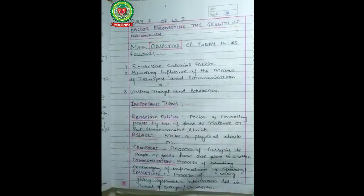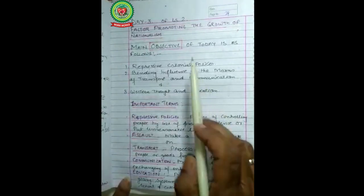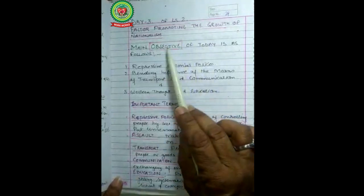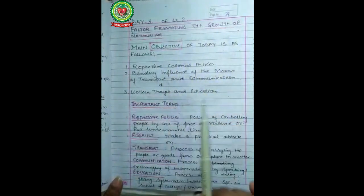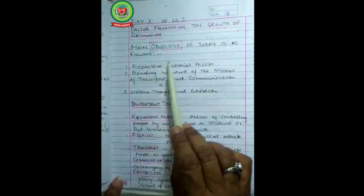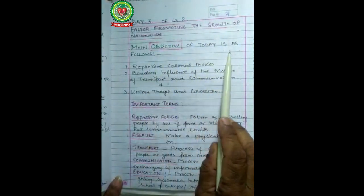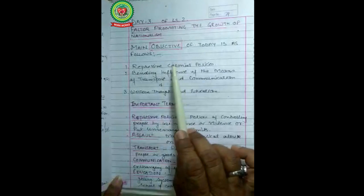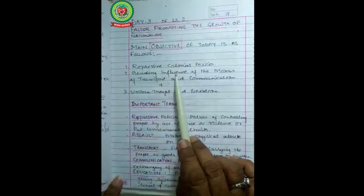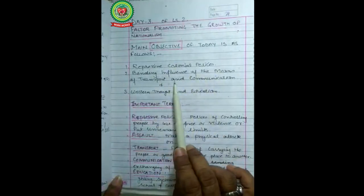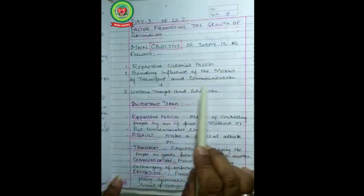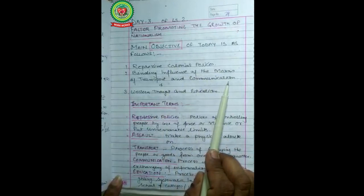Hello Class 9th. We are going to start with Day 3 of Lesson 2: Factors Promoting the Growth of Nationalism. The main objectives of today are as follows: repressive colonial policies, binding influence of the means of transport and communication, and western thought and education.